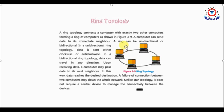We can share data by passing it from one device to the next. If any one device has a problem, the whole system can fail. Unidirectional means one direction, and bidirectional means both directions — these are working in both directions.